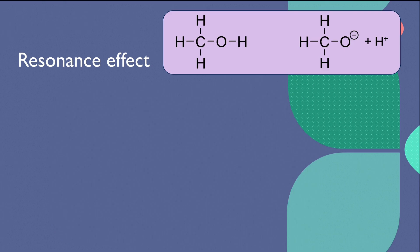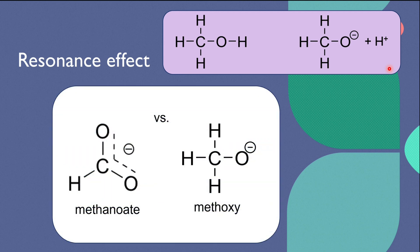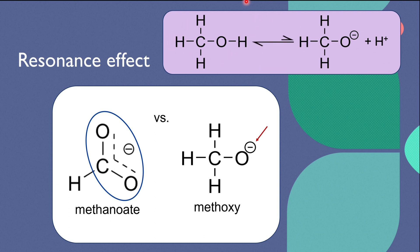Now let's compare the acidity of methanoid acid and methanol. This is methanol and the product formed when it dissociates. To explain the differences in their acidity, let's compare the conjugate bases: methanoid and methoxy. The negative charge on methanoid is dispersed due to resonance, making it a more stable ion. Because the oxygen is less negatively charged, it less readily reacts with a proton. However, methoxy ion does not have a resonance structure, so the oxygen bears a full negative charge, making it less stable. It is more prone to donate an electron pair to a proton to reproduce methanol, and thus the equilibrium lies heavily to the left. Therefore, methanol is a much weaker acid than methanoid acid.